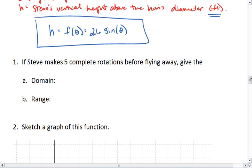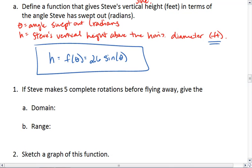Let's look at this next part. If Steve makes 5 complete rotations before flying away, give the domain and range. Well, we already know that 1 complete rotation is 2 pi. Which means 2 complete rotations is 4 pi. 3 would be 6 pi. 4 would be 8 pi.